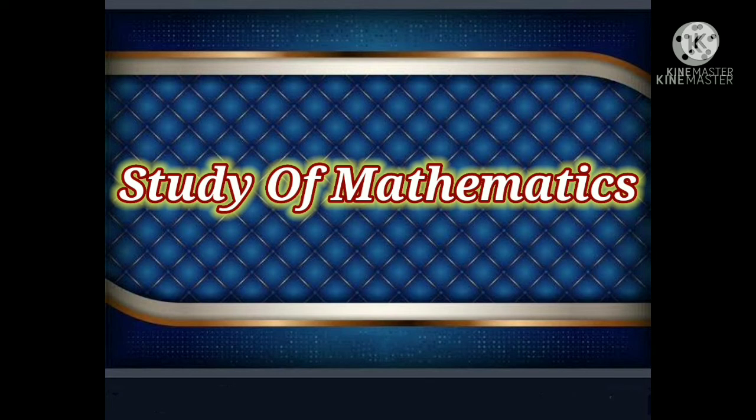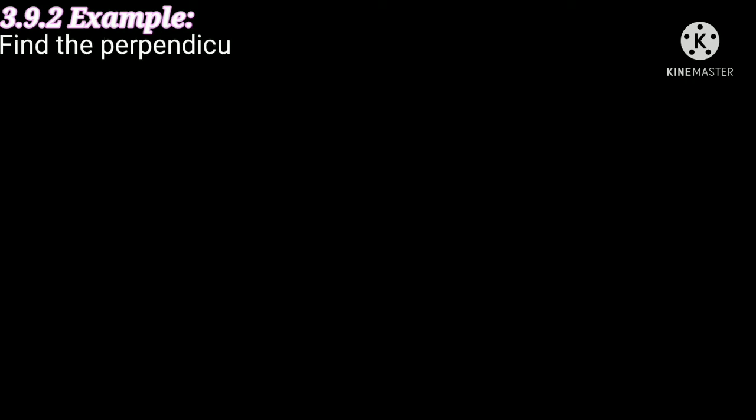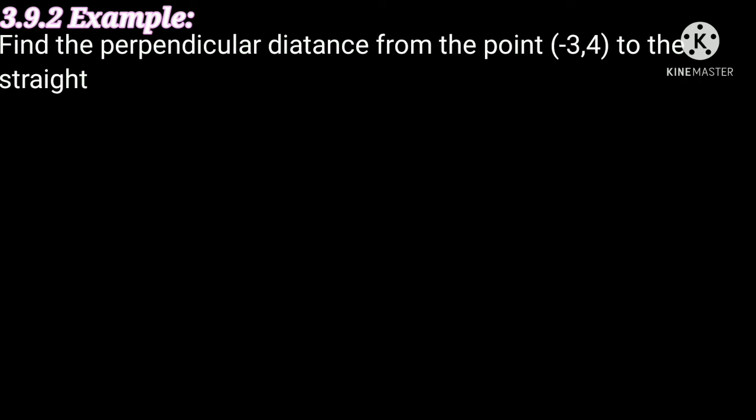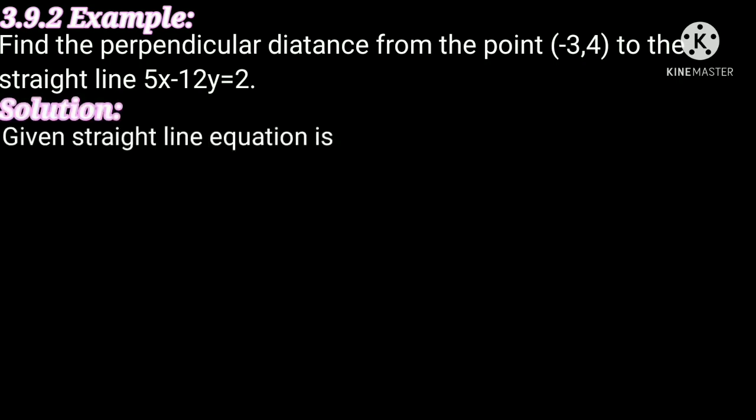Hi friends, welcome to our channel Study of Mathematics. The straight line 3.9.2 example problem is: find the perpendicular distance from the point (-3, 4) to the straight line 5x minus 12y equal to 2. This is our given problem. In this problem solution, we have to find the perpendicular distance from the point (-3, 4) to the straight line equation.